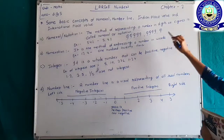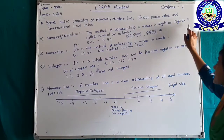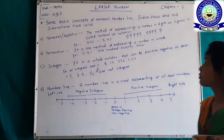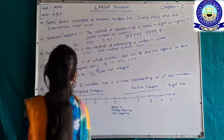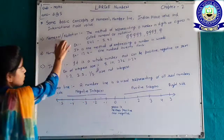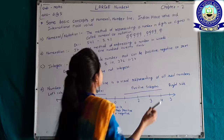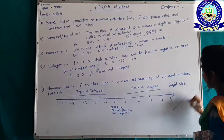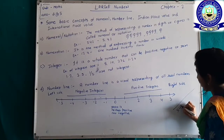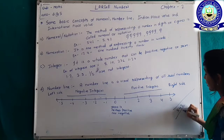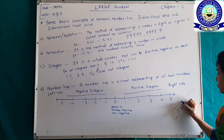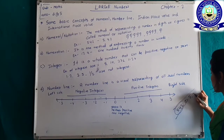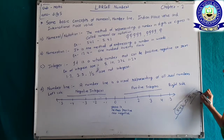The method of representing a number in digits or figures is called numeral or notation. For example, the number is 542. It is a number. A number is a group of digits. When we write it as 5, 4, 2, it is our numeral.